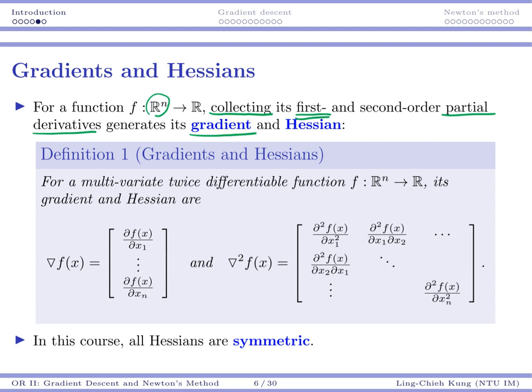If we have a multivariate twice differentiable function, then in that case its gradient, which is denoted with a reversed triangle in front of f, that means we're talking about the gradient. Then that gradient would be the first partial derivative, the second partial derivative, up to the last partial derivative. You collect all of them to give you a column vector. Then that's your gradient.